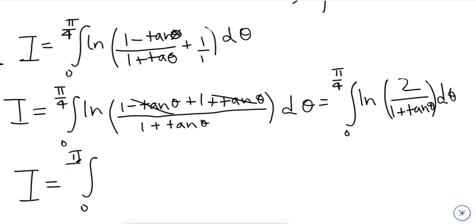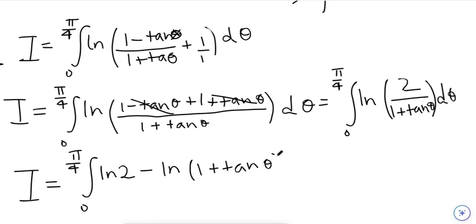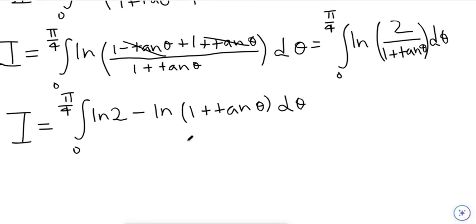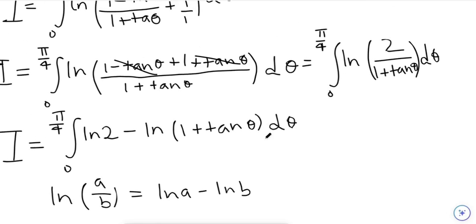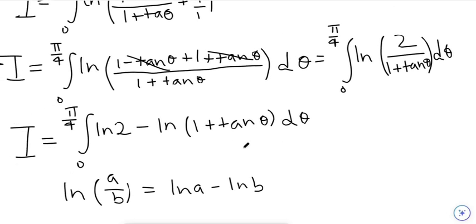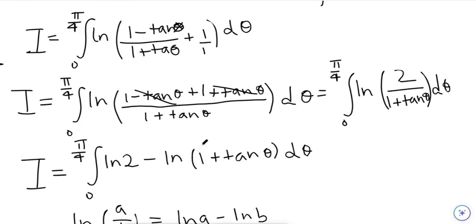Using the properties of logarithms, I equals the integral from 0 to π/4 of [ln(2) − ln(1 + tan(θ))] dθ, because ln(a/b) = ln(a) − ln(b).